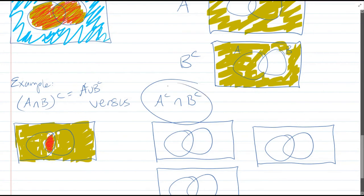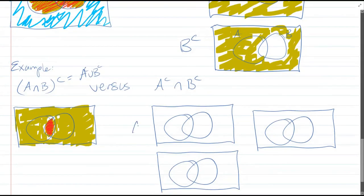So now let's look at the A complement intersect B complement. So first thing, A complement. Second thing, B complement. So A complement is everything that's not in the left. That's A complement. B complement is everything that's not in the right.